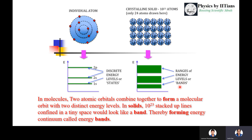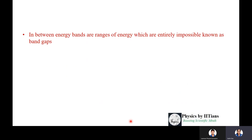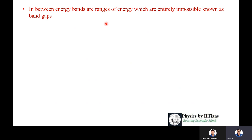In summary: in molecules, two atomic orbitals combine to form molecular orbitals with two distinct energy levels. In a solid, 10²³ atoms stacked in a tiny space produce a huge number of closely spaced energy levels that form a continuous energy band. In between these energy bands there are ranges of energy that are entirely forbidden, known as band gaps.